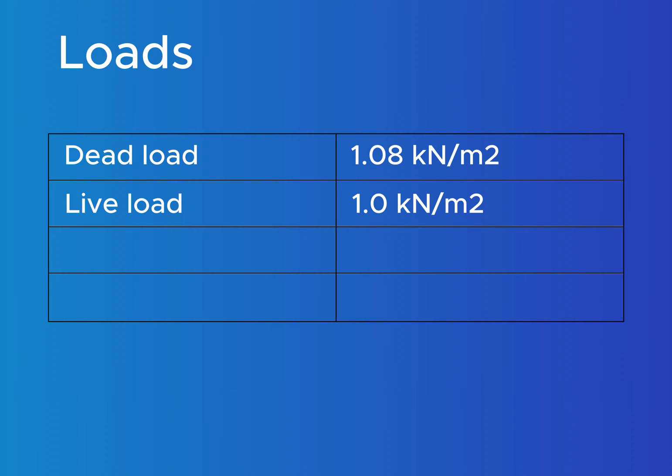For the design of the timber beam we'll use a characteristic dead load of 1.08 kN per square meter, a characteristic value of a life load of 1 kN per square meter, a snow load of 1 kN per square meter and a characteristic wind load of minus 1.0 kN per square meter.